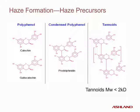On the left of this slide are the monomeric polyphenol haze precursors, such as catechin and gallocatechin. These monomeric polyphenols condense to form dimers and trimers, also called condensed polyphenols; an example of a dimer is prodelfinidin. On further oxidation, these dimers and trimers polymerize and form very large molecules called tannoids. The larger the polyphenols are in terms of molecular weight, the more polyphenolic OH groups they will have, and these OH groups readily combine with haze-giving proteins to make protein-polyphenol complexes, which translate into haze formation in beer.